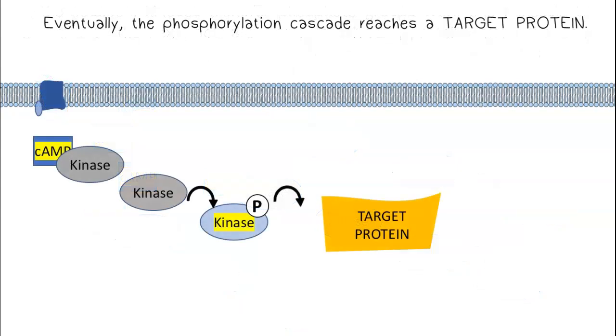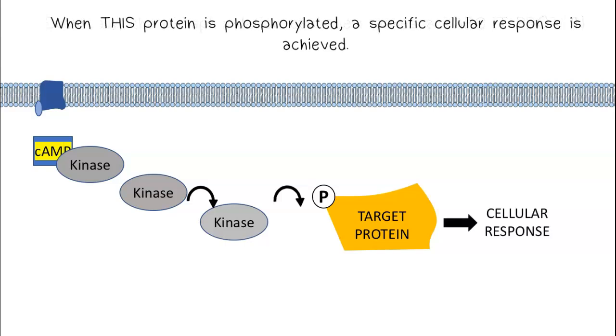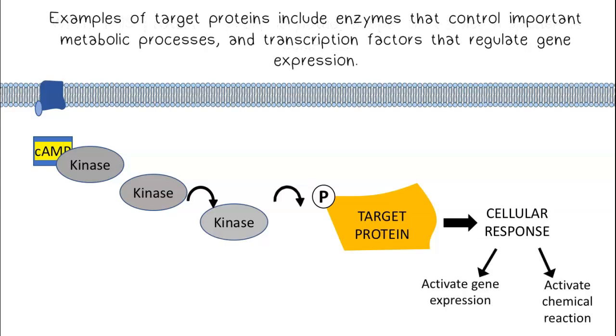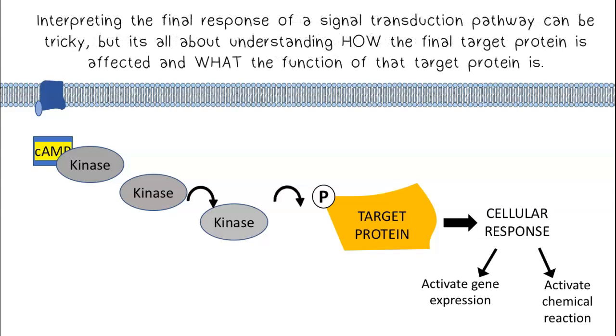Eventually, the phosphorylation cascade reaches a target protein. When this protein is phosphorylated, a specific cellular response is achieved. Examples of target proteins include enzymes that control important metabolic processes and transcription factors that regulate gene expression. Interpreting the final response of a signal transduction pathway can be tricky, but it's all about understanding how the final target protein is affected and what the function of that target protein is.